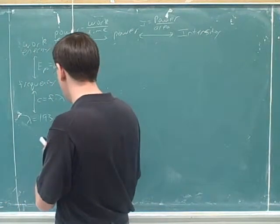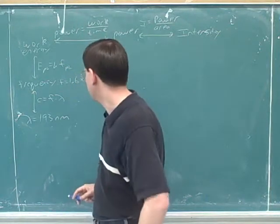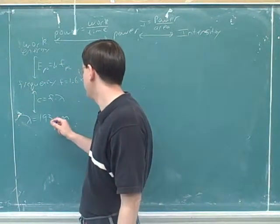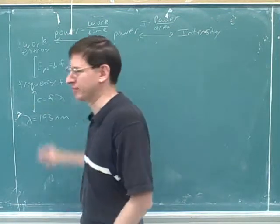What are the units on that? Okay, so you saw that this is 193 times 10 to the negative 9 meters, and then you divide that into 3 times 10 to the 8 meters per second, giving the frequency.